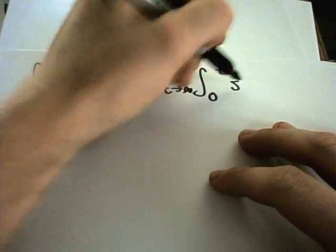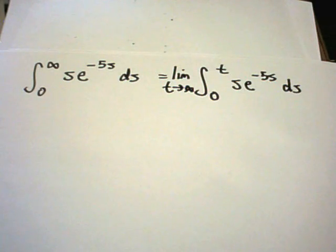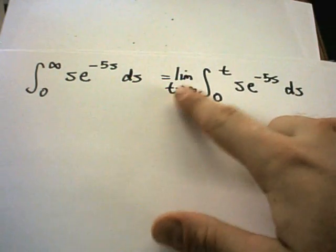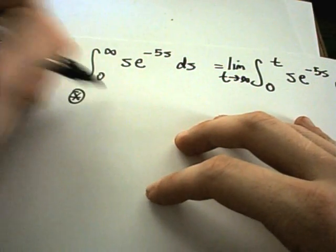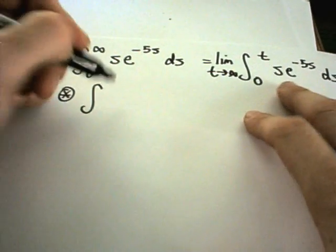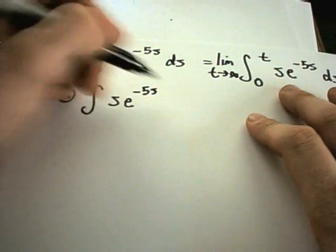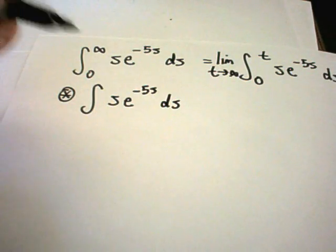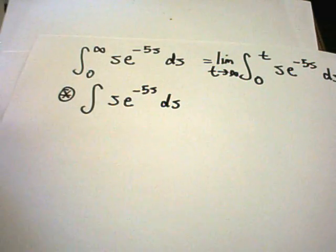I've got the integral of s·e^(−5s) ds that I have to work on. Because there's a limit and a definite integral, I'm going to work off to the side and find the antiderivative for s·e^(−5s) ds first. Once I calculate it, I'll rewrite it with the limit and the limits of integration back in.